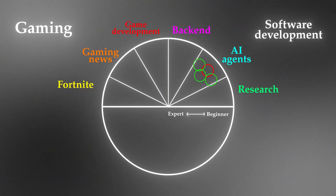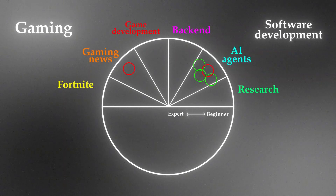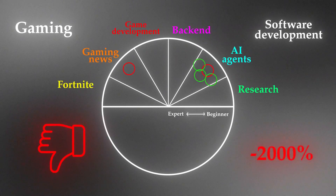Now let's say I post about gaming news as my second post. X is going to show that content to the same people it already mapped me to. Even though on a brand new account it might be shown to gaming fans, on this account those AI/software followers are going to hate it — giving me around minus 2000 points. This is why you need to stay in your lane and not post across different niches.